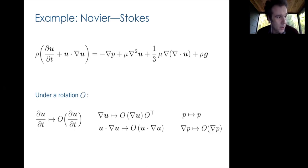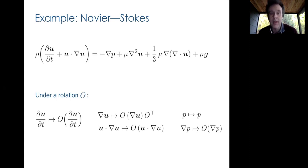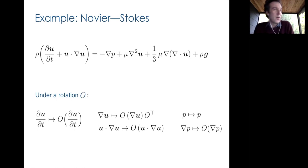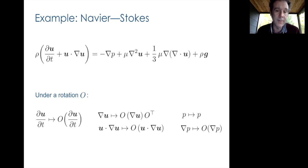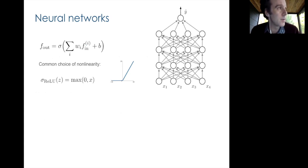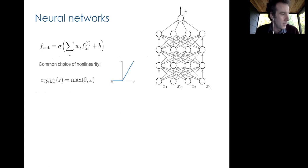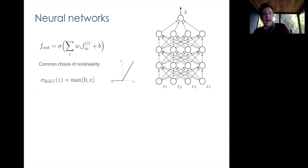This is a fundamental property of nature: physical laws must obey symmetries. It is an organizing principle of physics and the sciences more broadly, and a very important clue for discovering new laws of nature. Starting from the underlying symmetries that we know must be satisfied a priori, much of 20th-century physics riffs on this principle, extending it to more abstract symmetries — for example, the internal symmetries of elementary particles.